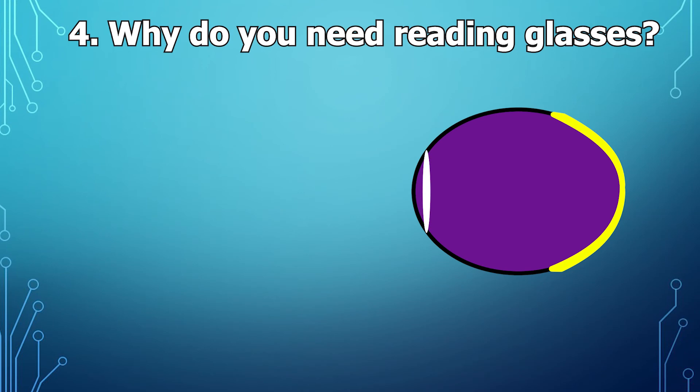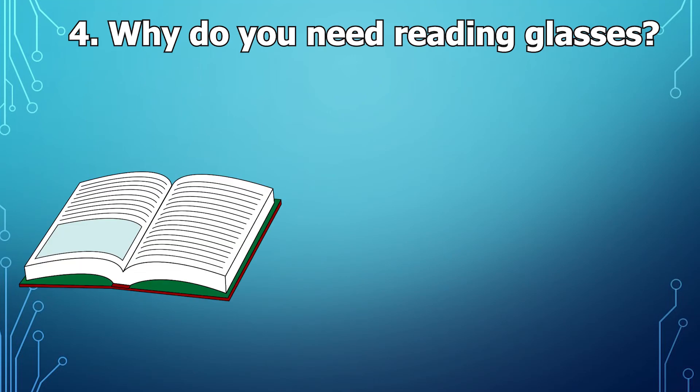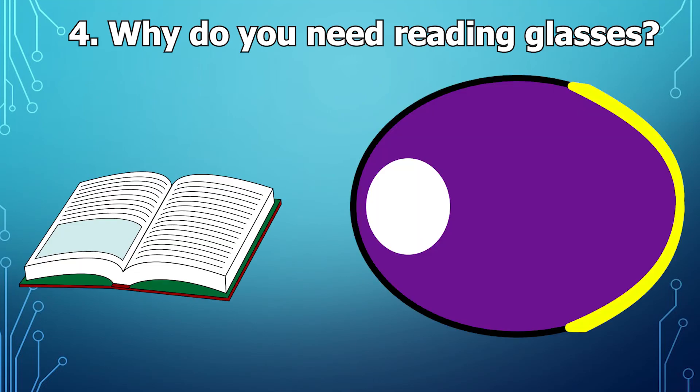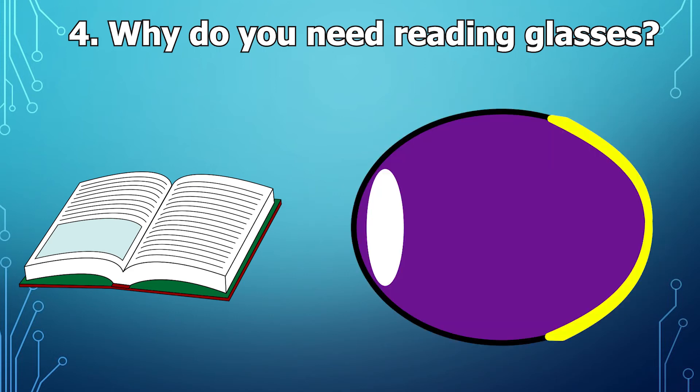So when you're looking far away, the lens is pulled flat so light just comes straight through and converges on the retina. But when you're looking at close objects, you want the lens to be more rounded so you can bend the light so you can get the clearest possible image of that closer object. But what happens when you age is that the lens loses this elasticity and you can't pull it into the rounded position anymore. So you're essentially just stuck with vision that's set at distance, and this is called presbyopia.